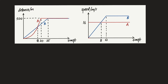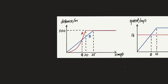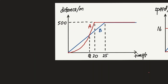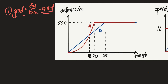Let's start with the graph on the left, which is the distance-time curve. One thing you need to know about distance-time is the gradient, which is rise over run — change in y over change in x. In this case, that will be the change in distance over the change in time, which is basically your speed. In other words, the gradient represents the speed.